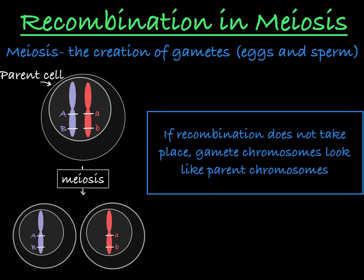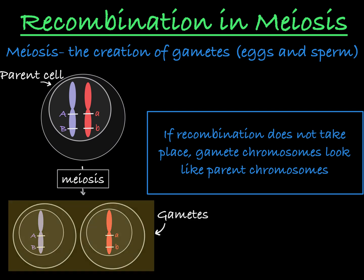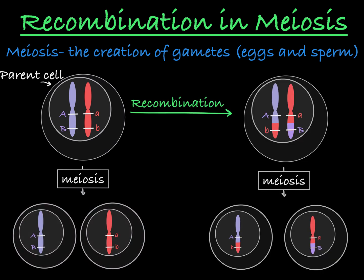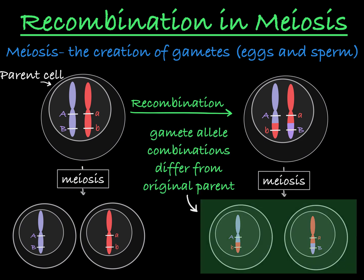If recombination does not happen, your gametes have chromosomes that look exactly like the parental chromosomes, with the linked genes traveling together. If recombination occurs between two genes during meiosis, the gametes created will contain a different mix of alleles on the inherited chromosomes when compared to the original parent chromosomes.